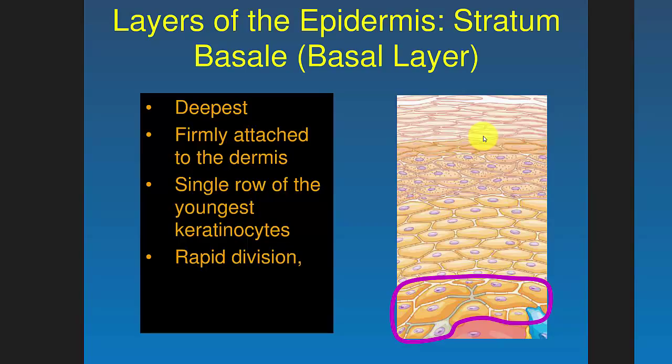The deepest or basal layer kind of sounds like 'basement' — the basement is the lowest level of your house, and the basal layer is the lowest layer of your skin. It's firmly attached to the dermis. It contains a single row of the youngest keratinocytes, undergoing rapid mitosis to divide and feed cells that will rise up through the layers, dry out and die, and become the outermost layers of the skin.